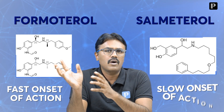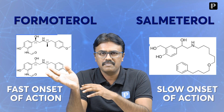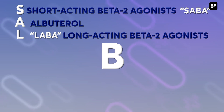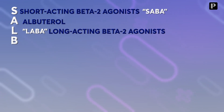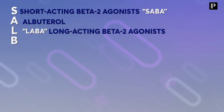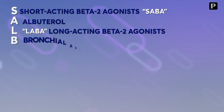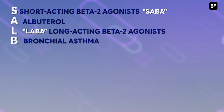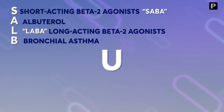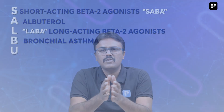The next letter is B. B stands for bronchodilator, and we use it mainly — B for bronchial asthma. The next letter is U, so the drug has a uterine relaxant property.